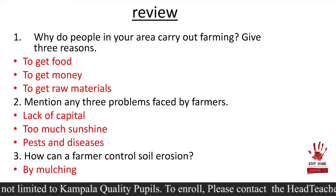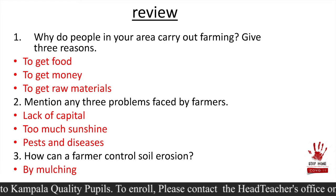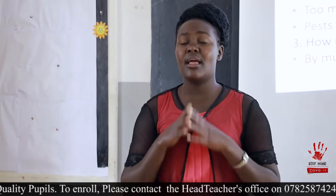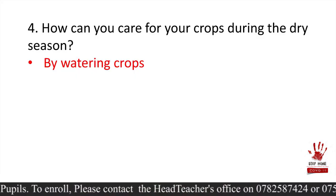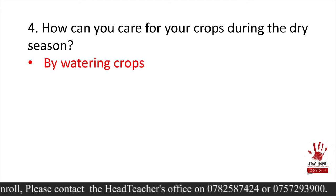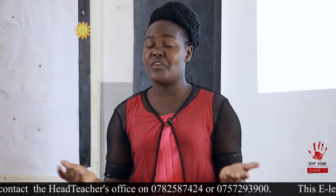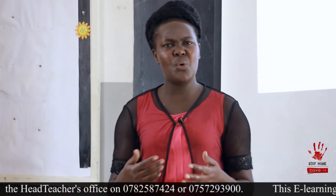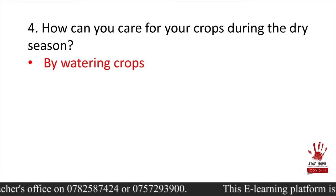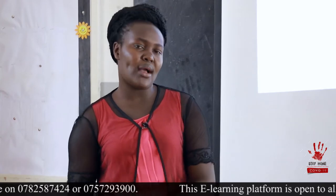The third question: how can a farmer control soil erosion? By mulching. You remember we looked at different pictures where people were covering their gardens with dry grass — that is mulching. Lastly, how can you care for your crops during the dry season? I told you to relate it to the gardens we have at home, with plants in tins or sacks. You need to water them. By watering crops, you can help them survive the dry season.